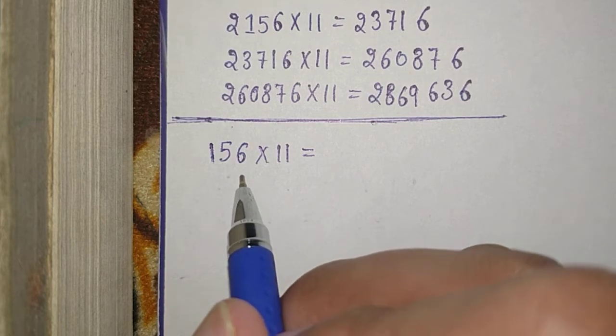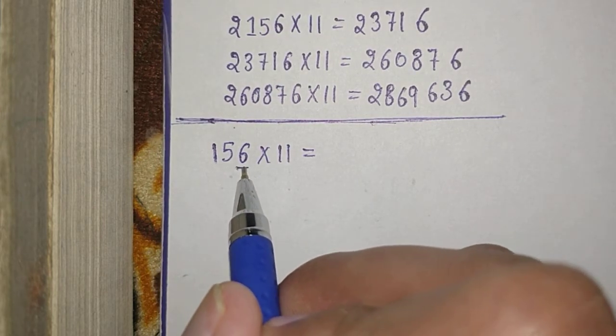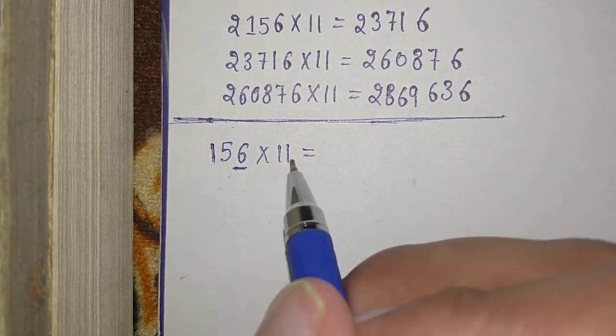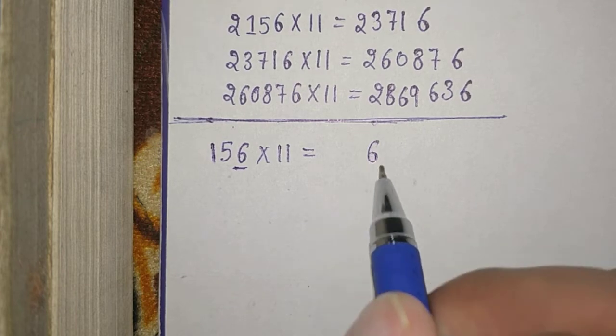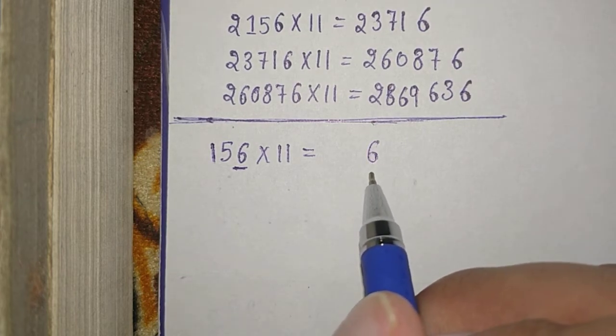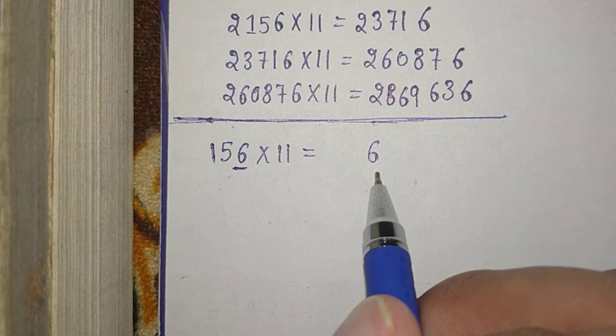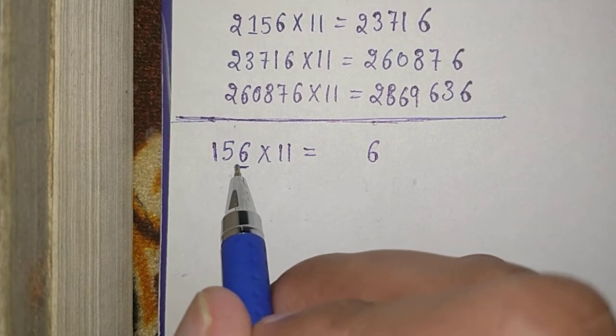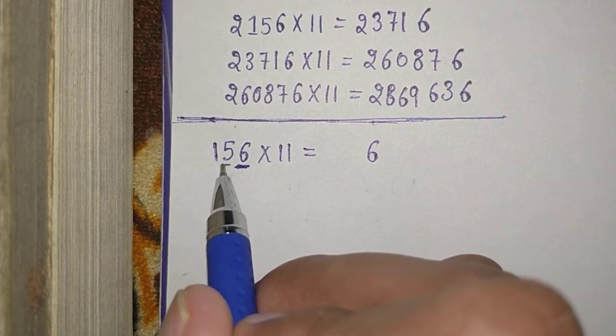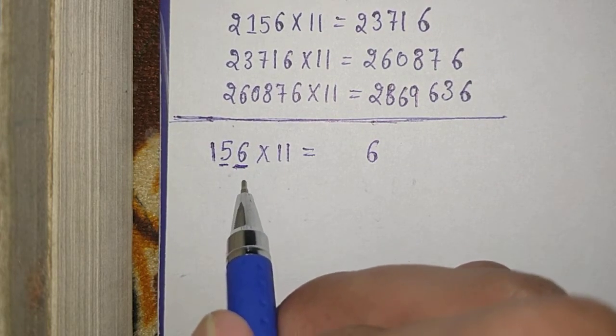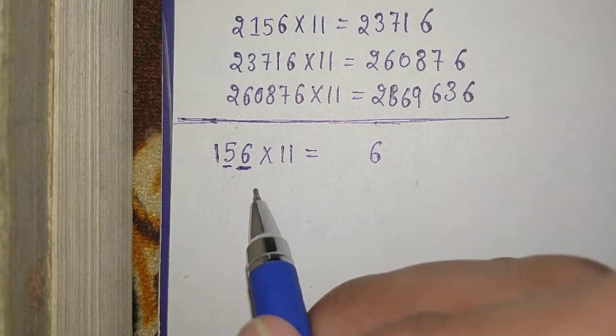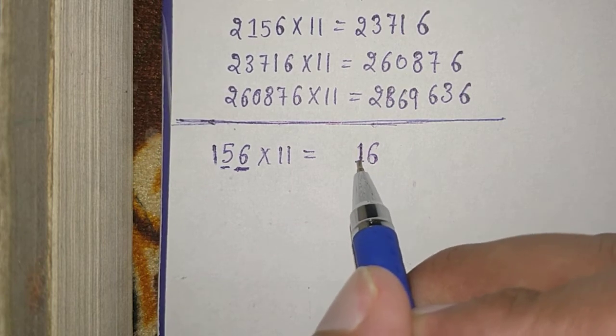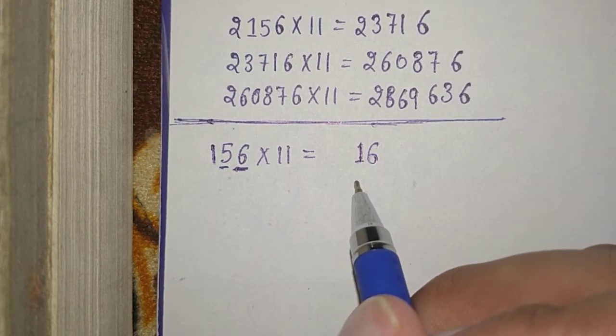Here, the first step is we have to take the last term of this number that is 6 and put it at here as it is. It will give the last term of the answer number. Then we have to add 6 and 5. So, 6 plus 5 is equal to 11. We have to take 1 at here and 1 as carry.